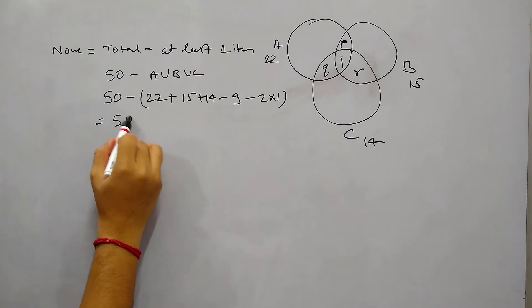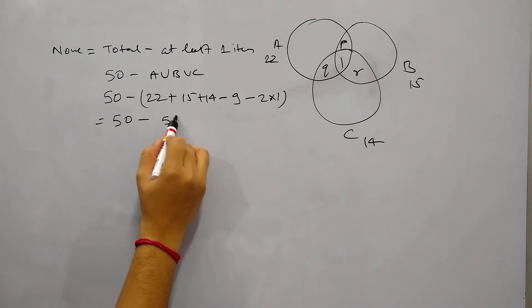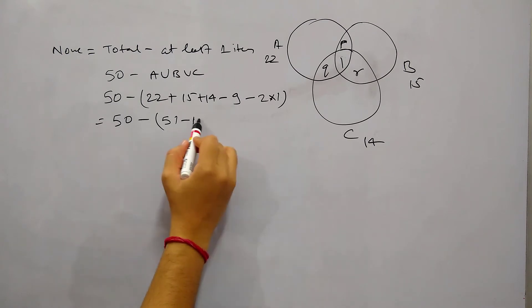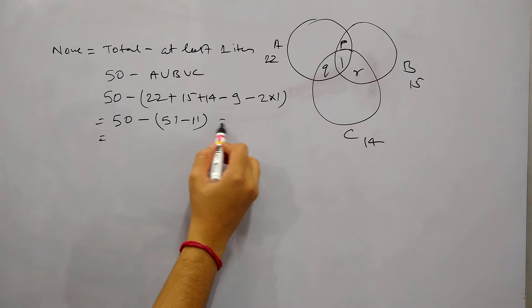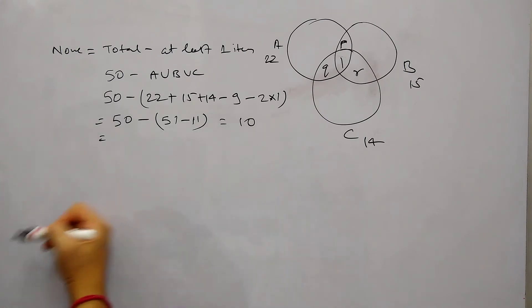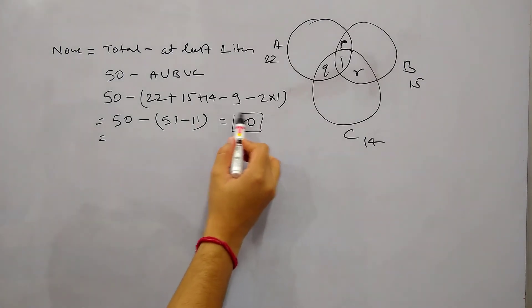So 2 into 1, this will be 50 minus 51 minus 11, or this is 50 minus 40, so this is 10. So the answer of this question will be 10, so there are 10 teachers who do not own anything.